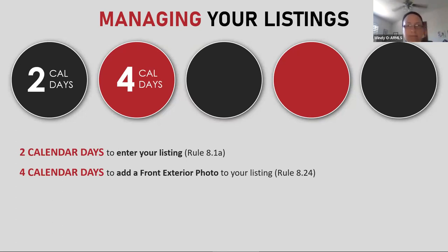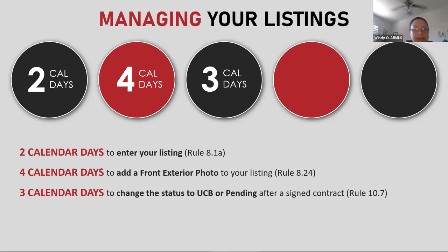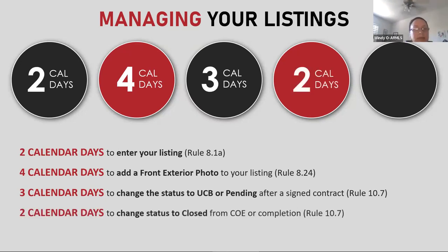You have four calendar days to add a front exterior photo. Maybe it was blurry, or your photographer hasn't sent photos back yet — that's fine. Just know you have a four-day window. Three calendar days to change the status: if you get an offer, you have three days to move it from active to UCB or pending after the signed contract. Then two calendar days to change from UCB or pending to closed after the close of escrow.